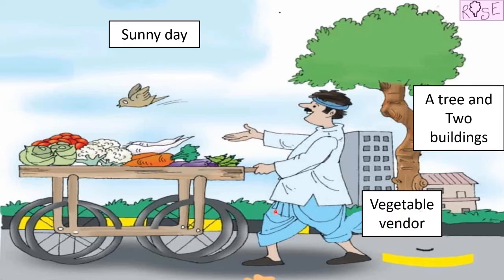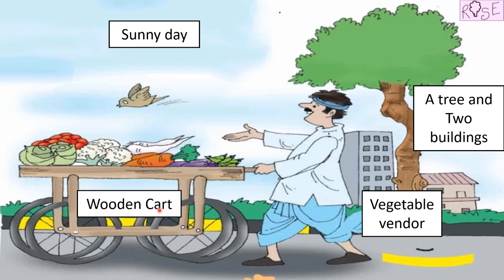He is selling vegetables. But on what thing is he selling the vegetables? He is selling the vegetables on a wooden cart. And this wooden cart has four wheels — one, two, three, and a fourth wheel. Yes, this wooden cart has four wheels.